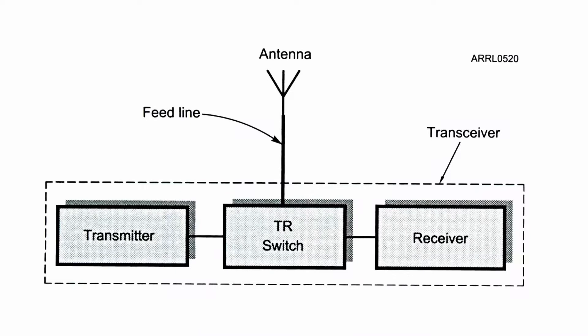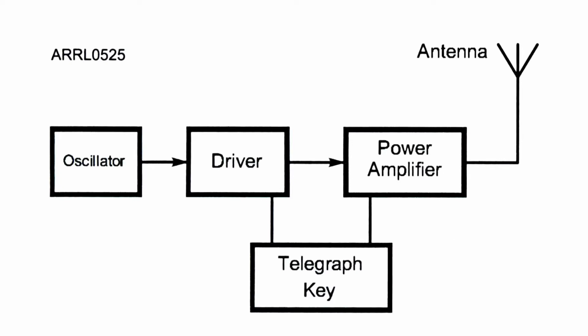For example, in Section 2.2, a block represented an entire transmitter. In this section's Figure 3.17, there's a simple block diagram of a Morse code transmitter that shows parts inside a transmitter as blocks in their own right.